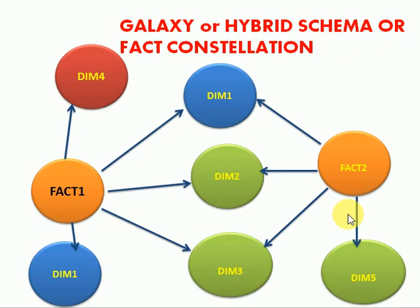The galaxy schema requirement is a minimum of two fact tables — maximum there is no limit, but minimum is two fact tables. It is like two star schemas. So if you have five fact tables, you can design a combination of five star schemas but those are interconnected — that is what we call fact constellation.